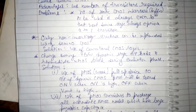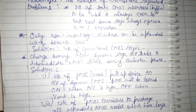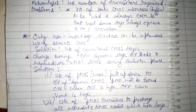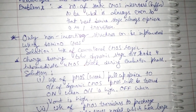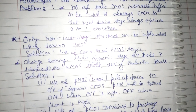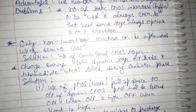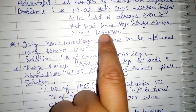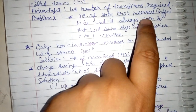However, there are also some problems with using Domino CMOS logic. The first problem is that the number of static CMOS inverters, or buffers, used must always be even. The number of CMOS inverters or buffers always needs to be even because if it is not even, a transition from 1 to 0 can happen. To ensure transitions occur only from 0 to 1, we must always use an even number of CMOS inverters or buffers.